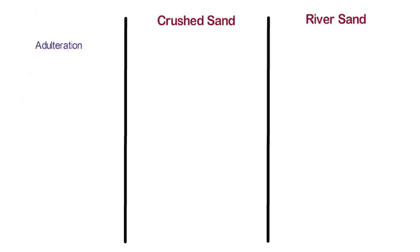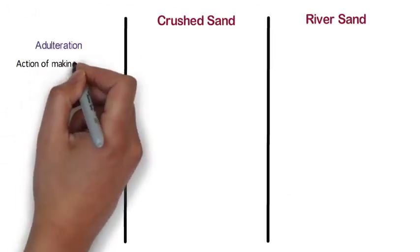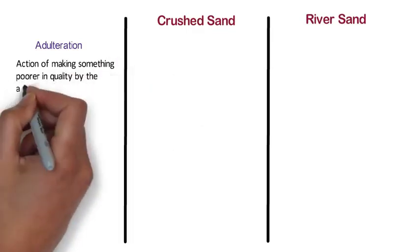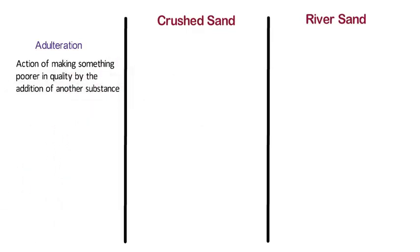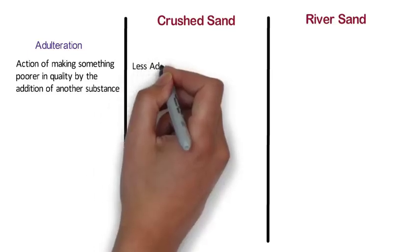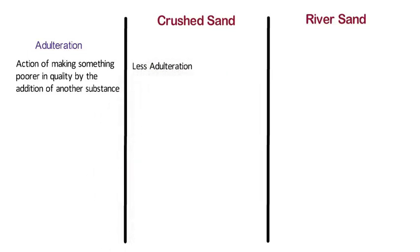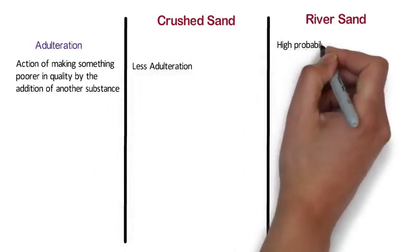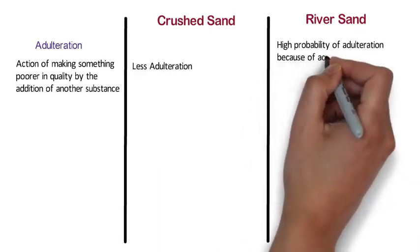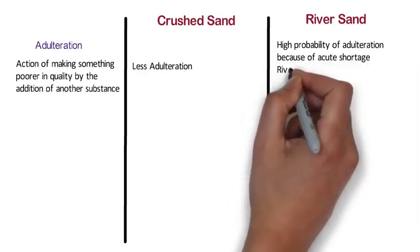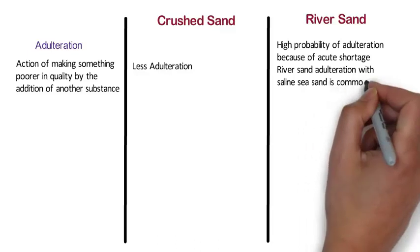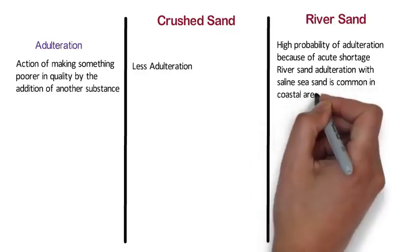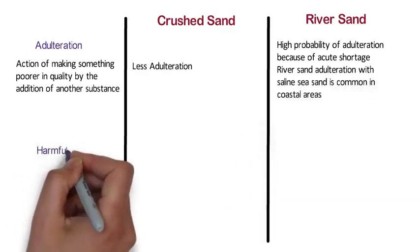Adulteration: Adulteration means the action of making something poorer in quality by the addition of another substance. Crushed sand has less adulteration, whereas river sand has a high probability of adulteration because of acute shortage. River sand adulteration with saline sea sand is common in coastal areas.